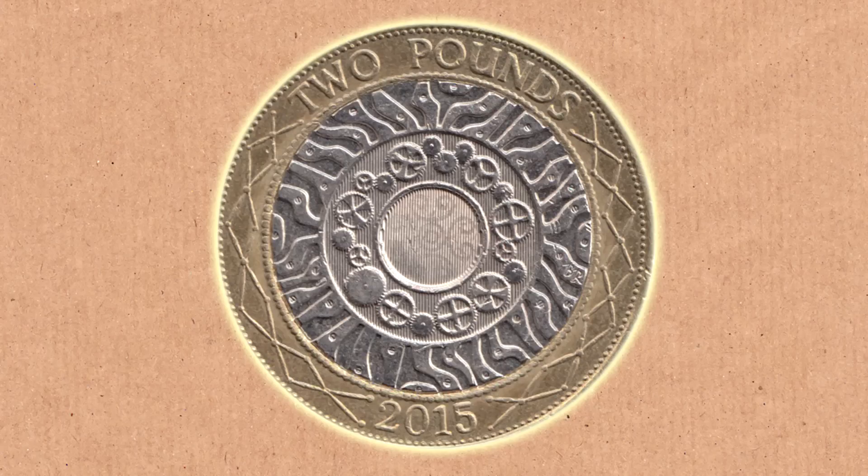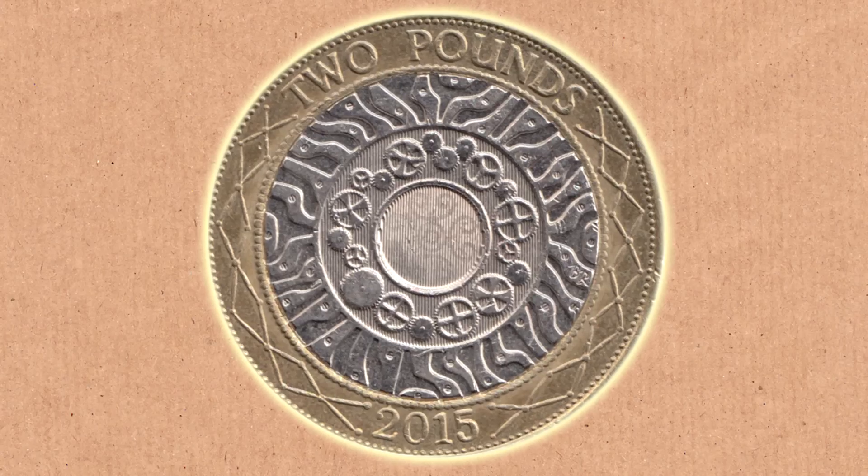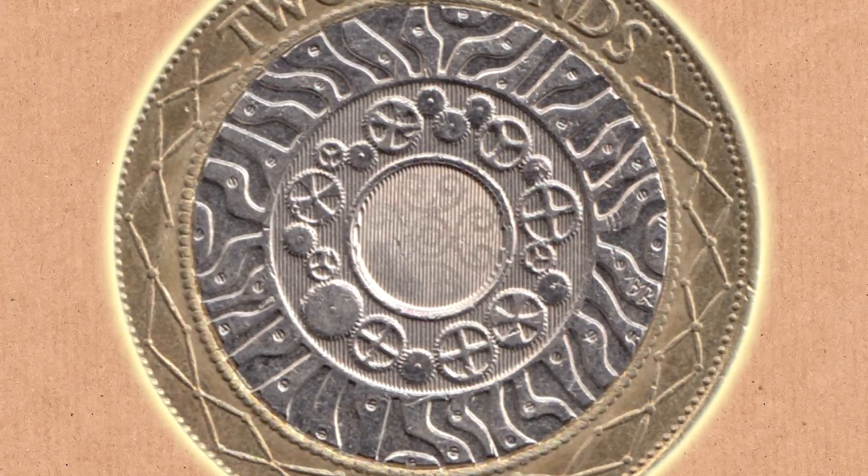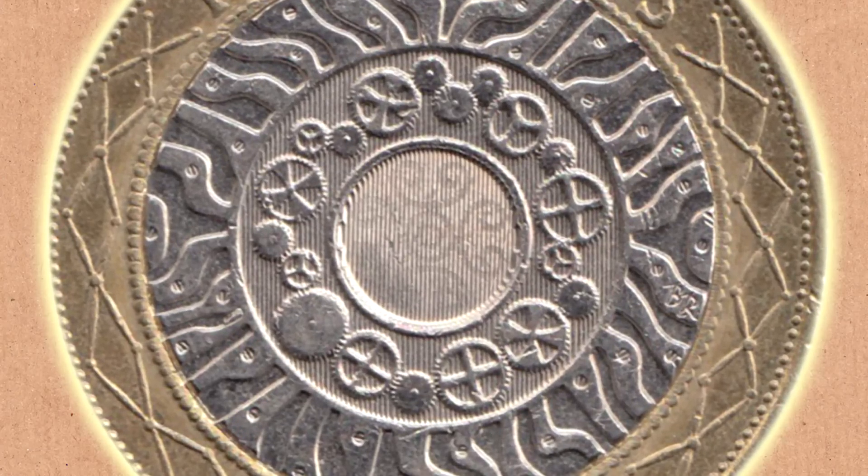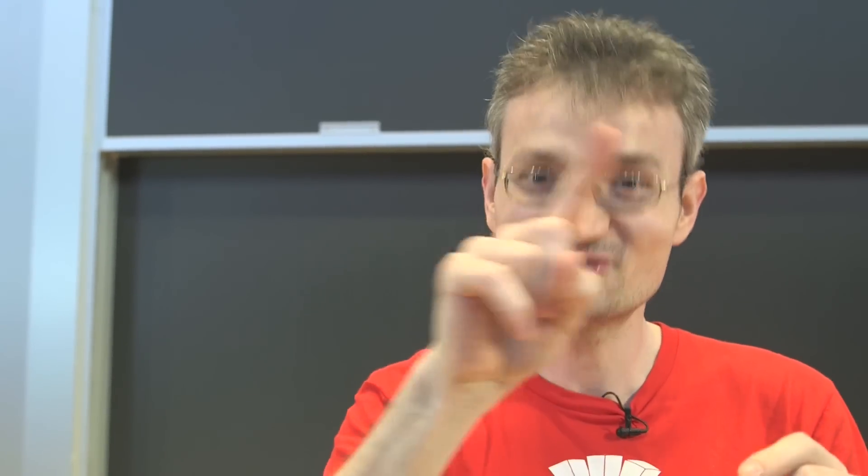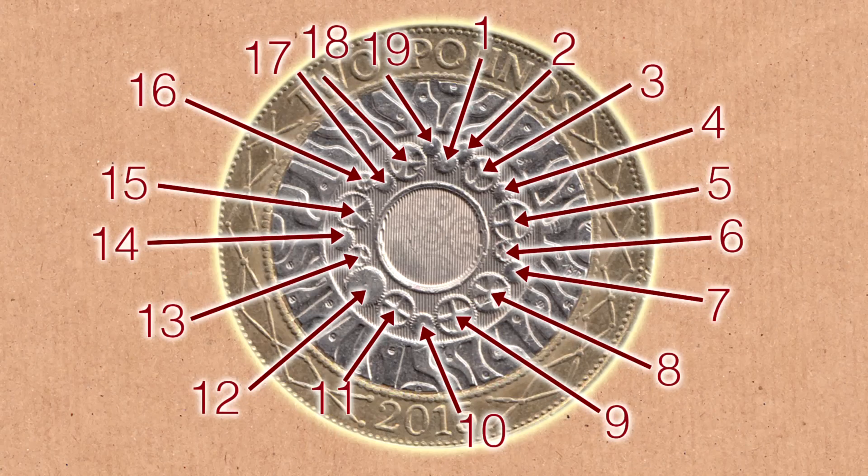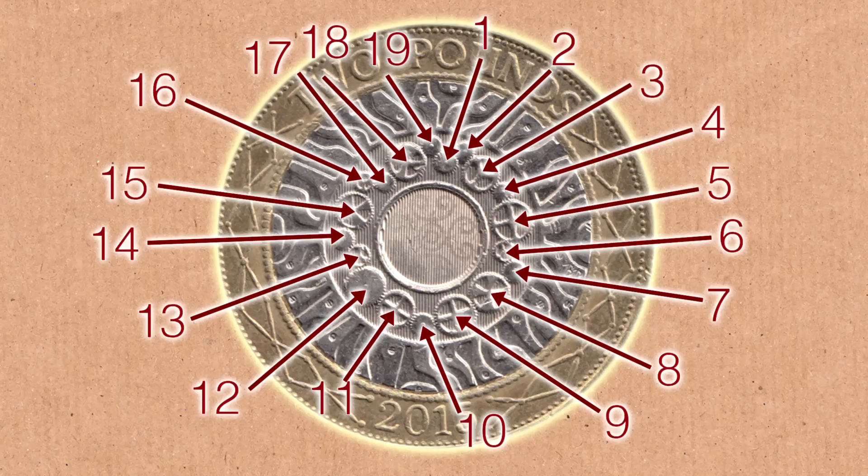If you happen to have a British two pound coin, and you look on the back of it, you will see there's this design with gears and various other things about technology and the Industrial Revolution. So if you look closely, there's 19 of these gears, and 19 is odd. So it goes this way, it goes this way, it goes this way. Odd means that it won't work. So your symbol of technological progress or whatever, it doesn't move.